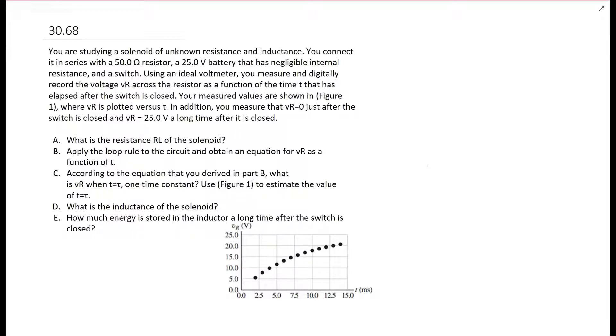First thing it asks is what is the resistance RL of the solenoid? It tells you the voltage of the battery and the fact that there's a resistor with some nice resistance, and it tells you that immediately after the switch is closed, the voltage in the resistor is zero, but after a while it goes back up to 25, which 25 is the original voltage.